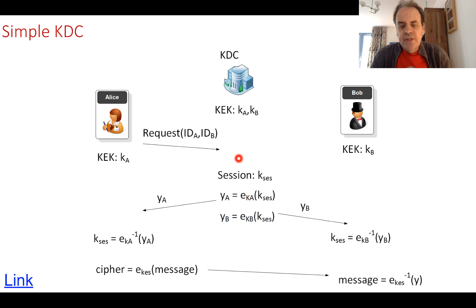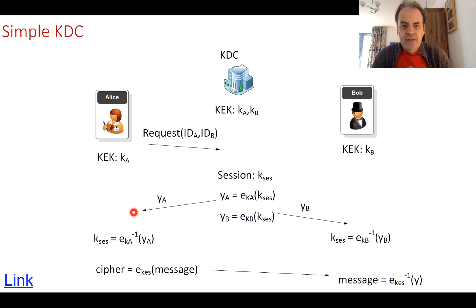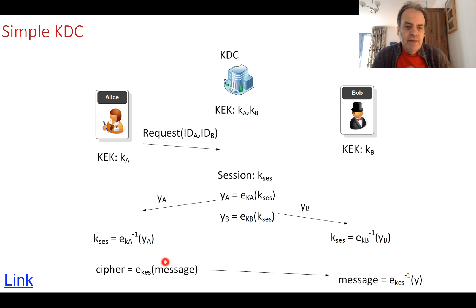The KDC then creates a session key — a random 128-bit or 256-bit key. It encrypts the session key with Alice's key and sends it to Alice. The same is done for Bob: Bob's key is used to encrypt the session key and that is sent to Bob. They each decrypt with their long-term key, and they should both end up with the same session key. When communicating, the message is encrypted with the session key to produce a ciphertext, and on the other end it is decrypted back to the message.